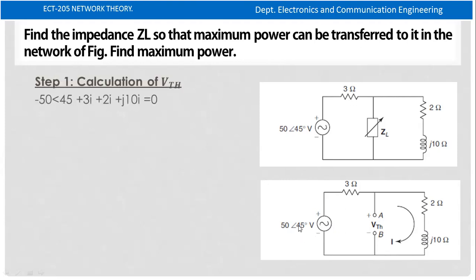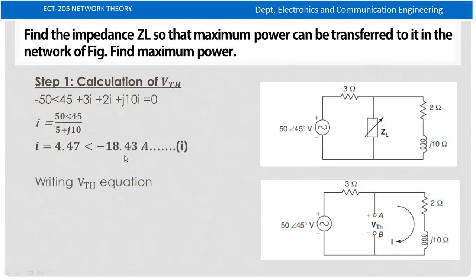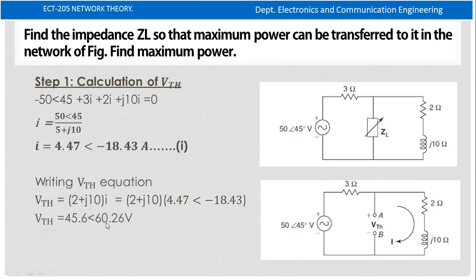Applying KVL: minus 50 angle 45 plus 3 times I plus j10 times I equals 0. Solving, iE is substituted to find Vth. The magnitude of Vth is 45.6, at angle 60.26 degrees.